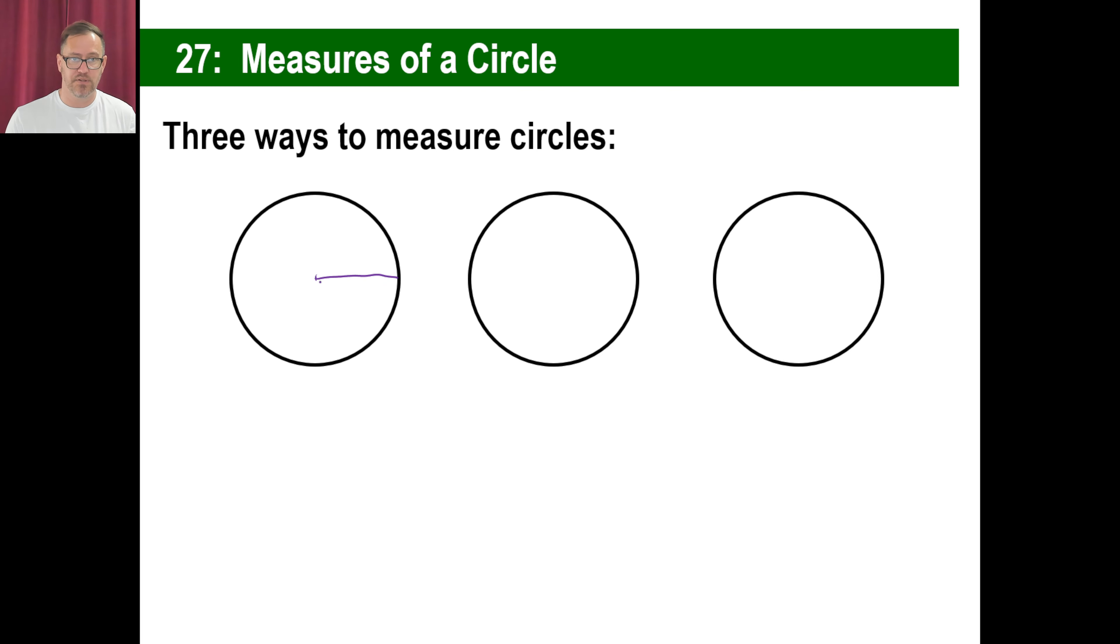and make sure you have these down. This is a line segment from the center of the circle right to the edge of the circle, and this is called a radius. The plural of radius is radii. Looks kind of weird. I don't know many English words that have two i's right next to each other.